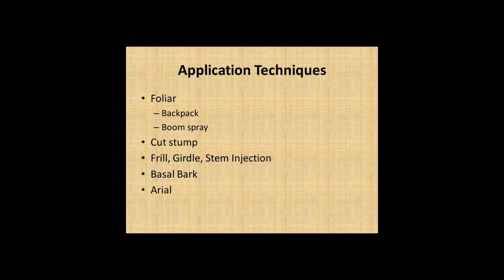Application techniques include: foliar application using a backpack sprayer or boom sprayer; cut stump application; frill, girdle, or other stem injections; basal bark treatments; and aerial spraying as well.